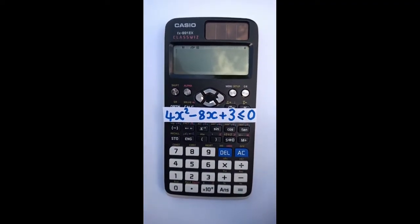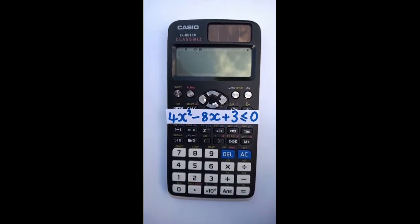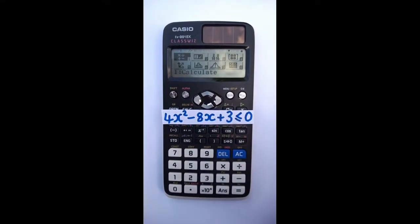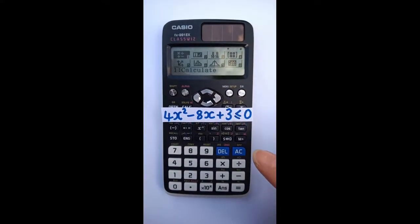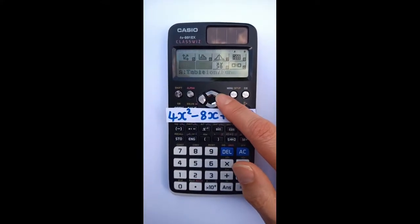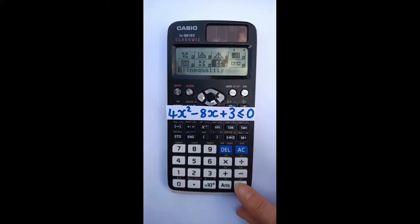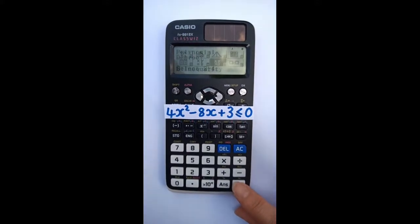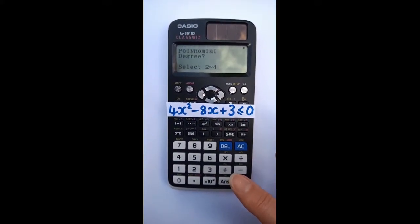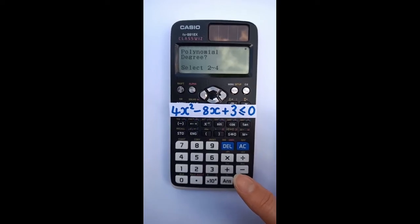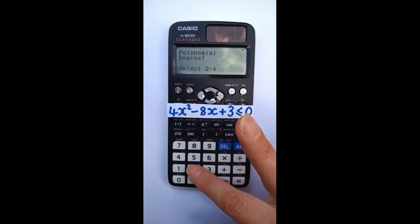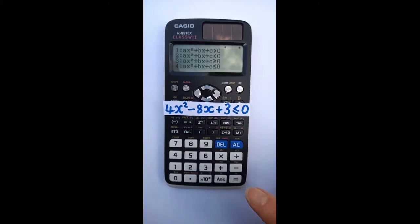Here's how to solve quadratic inequalities using this Casio calculator. Press menu, now navigate to B which is the inequality option. Press equals to choose that. Tell the calculator that you want to solve quadratic inequalities by typing in 2.